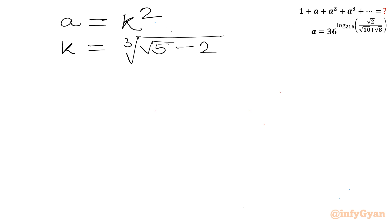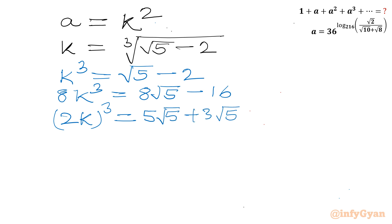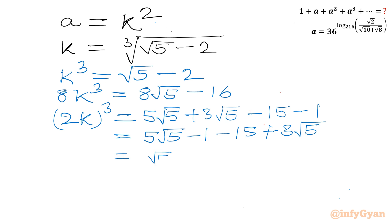I will use Simon's favourite factoring trick to find the value of k. Let's cube both sides: k³ = √5 − 2. Multiply both sides by 8: 8k³ = 8√5 − 16, or (2k)³ = 8√5 − 16. We split the right-hand side: 8 = 5 + 3, so we write 5√5 + 3√5 − 15 − 1, rearranging carefully.